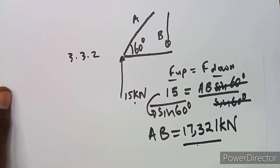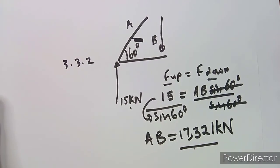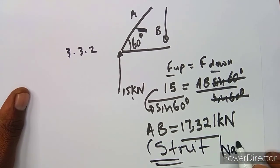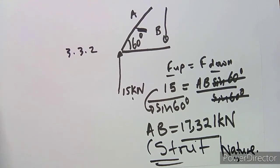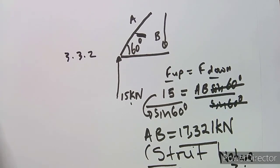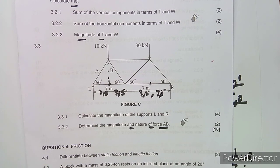Remember: vertical components use sine, horizontal use cosine. The magnitude of AB is 17.321 kilonewtons. As for the nature, AB is a strut. That's how we answer these questions — this question is worth a total of 16 marks. Make sure you subscribe to Meson African Motifs so you don't miss these classes. Until next time!